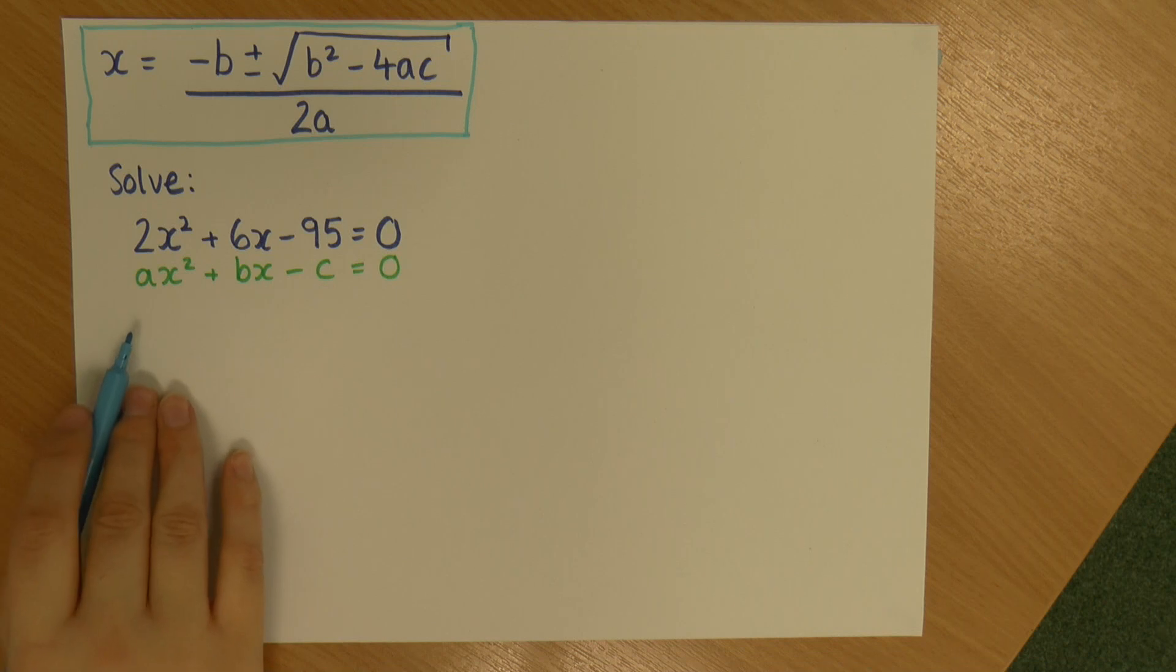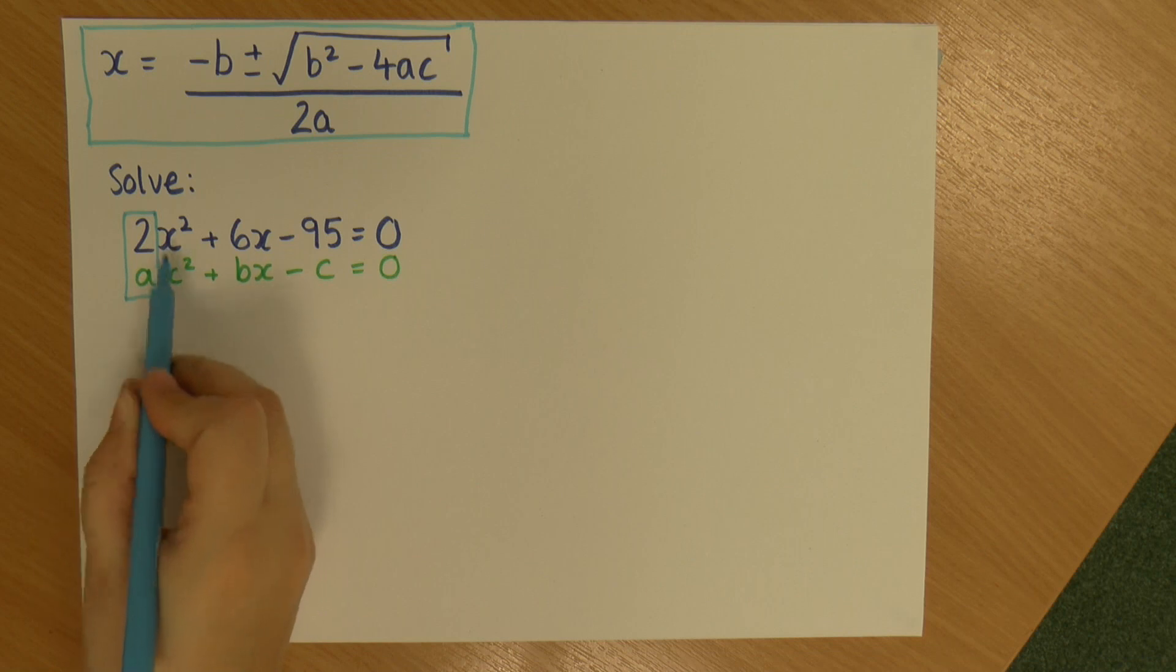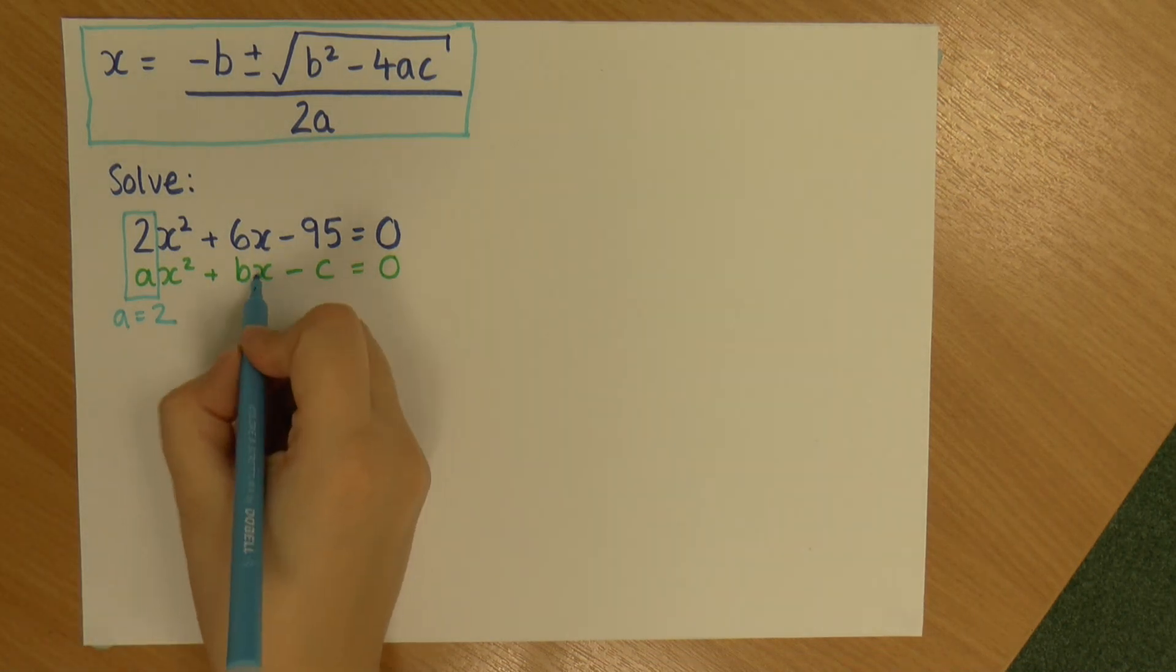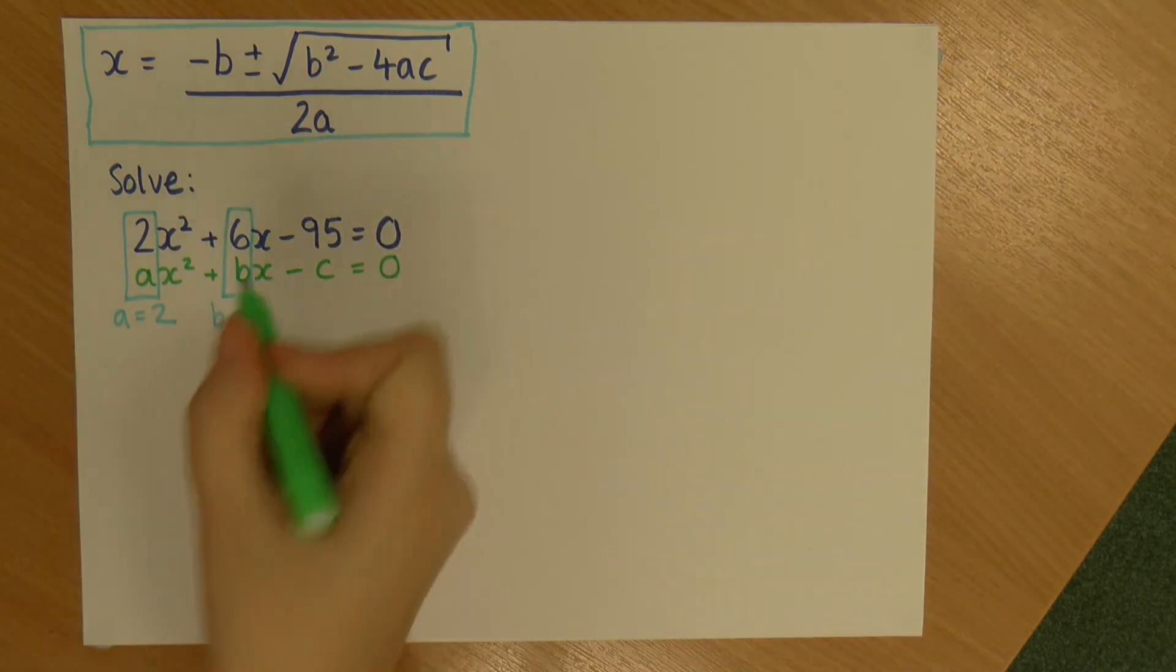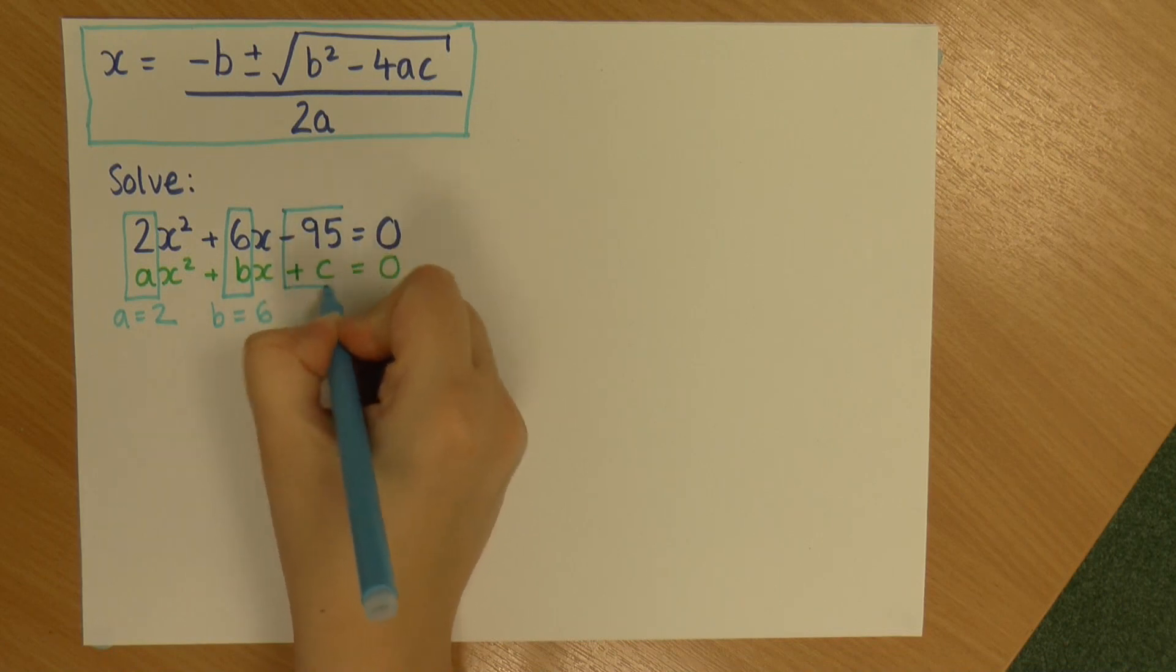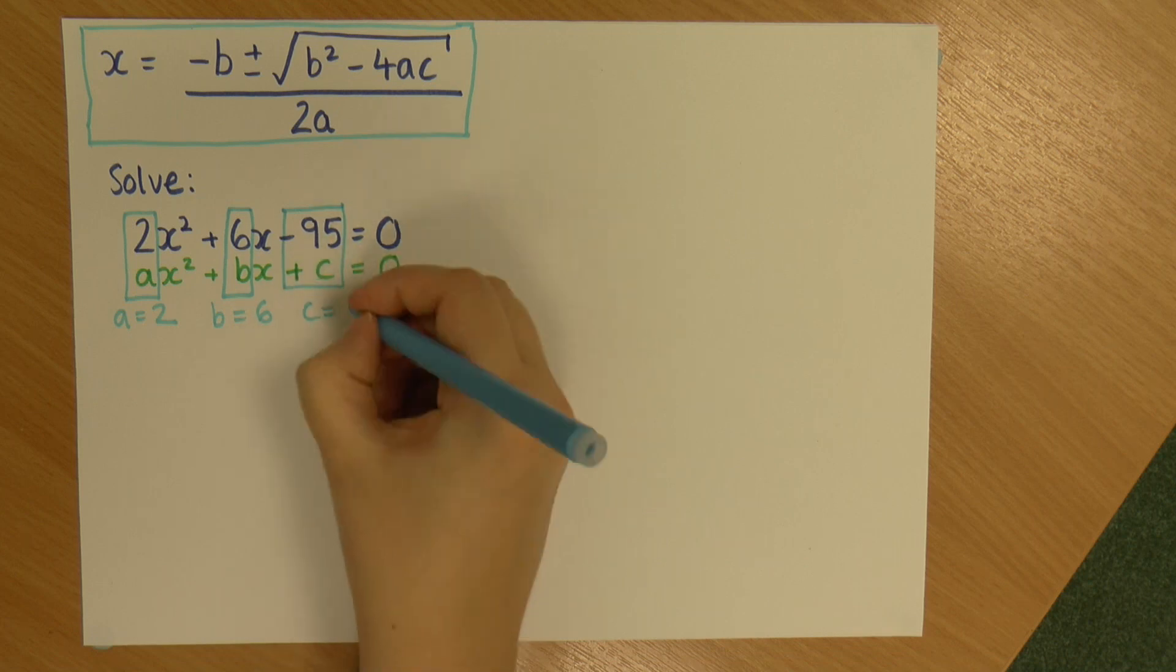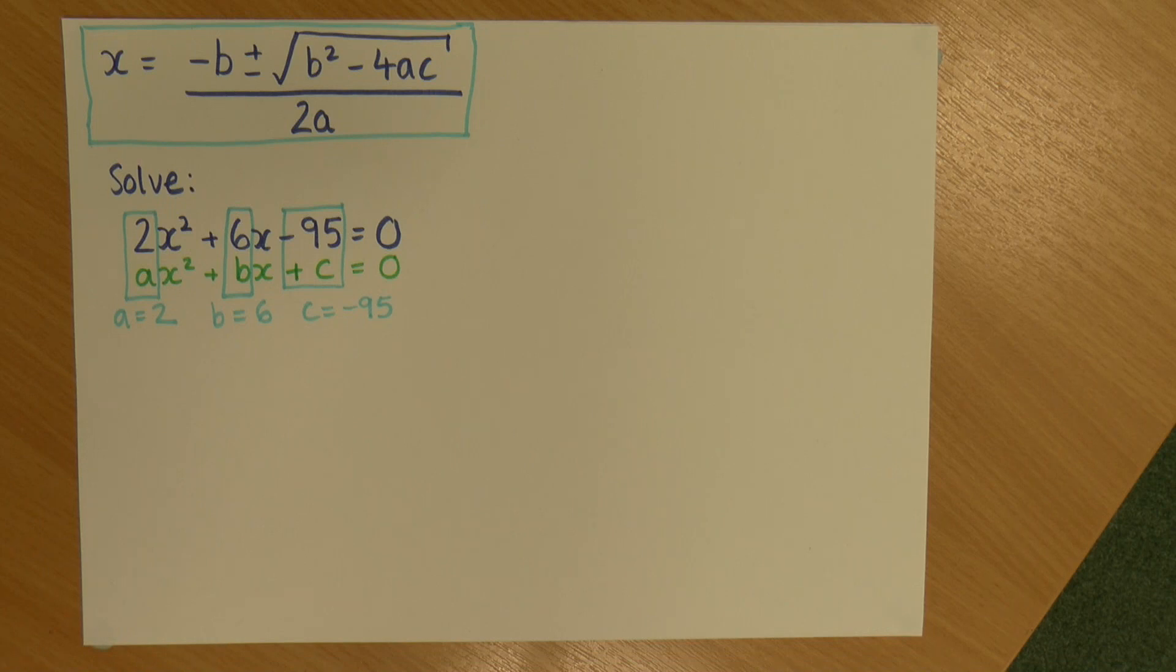So we are just looking at what the numbers are before the x squared, the x, and the number on its own. So for ax squared, a is 2 as we can see. For bx, b is 6, and for c, sorry that should be a plus, for c, c is minus 95. So make sure that you're including any negatives if they are present.